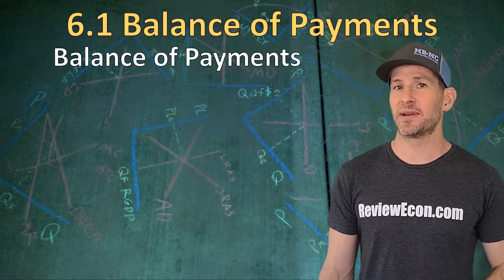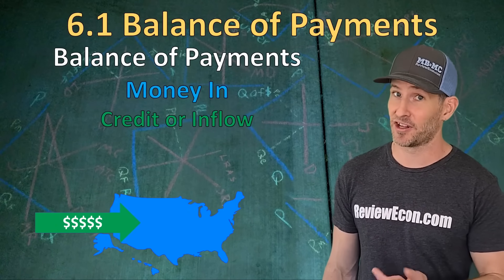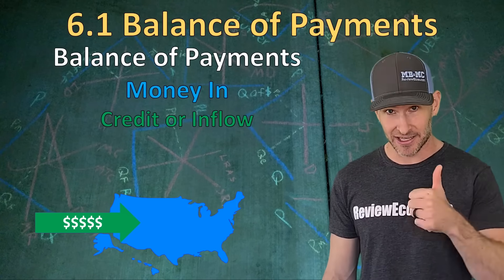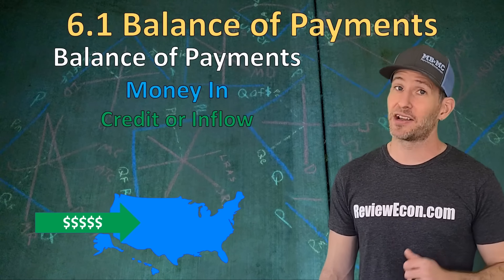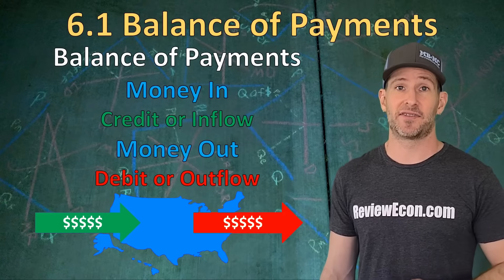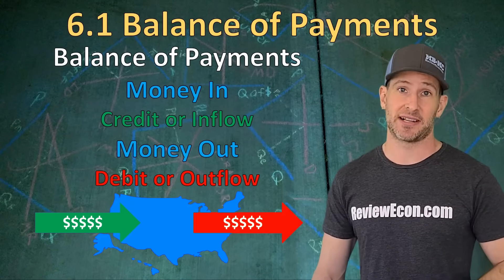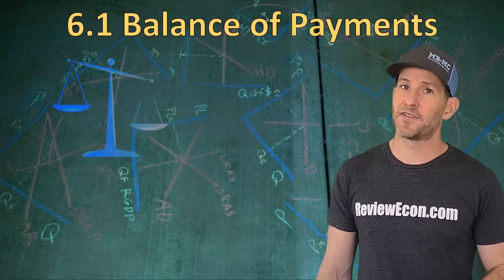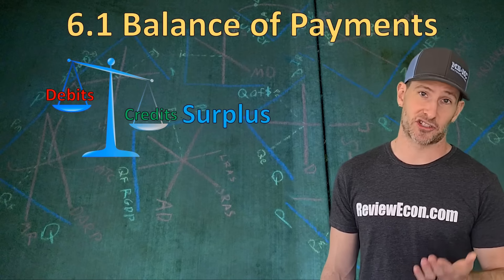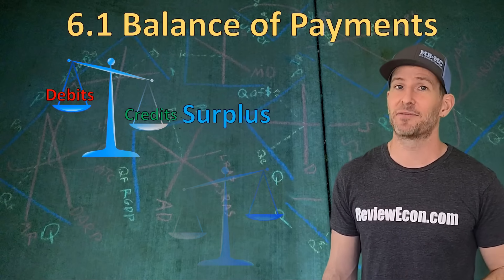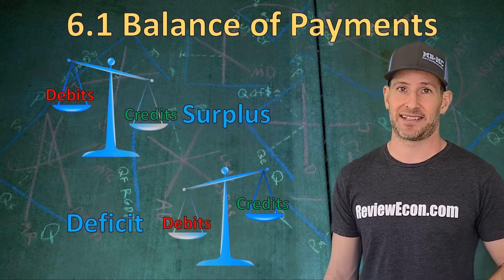When it comes to keeping track of those payments, money into an economy is a credit, also called an inflow. Those are positive numbers that increase the balance in one of these accounts. Money going out of an economy are negative numbers, and these are called debits or outflows, and these will decrease the balance of one of these accounts. If an account has more credits than debits, then that account is said to be in a surplus. If, on the other hand, we have debits that are greater than credits, then that account has a deficit.